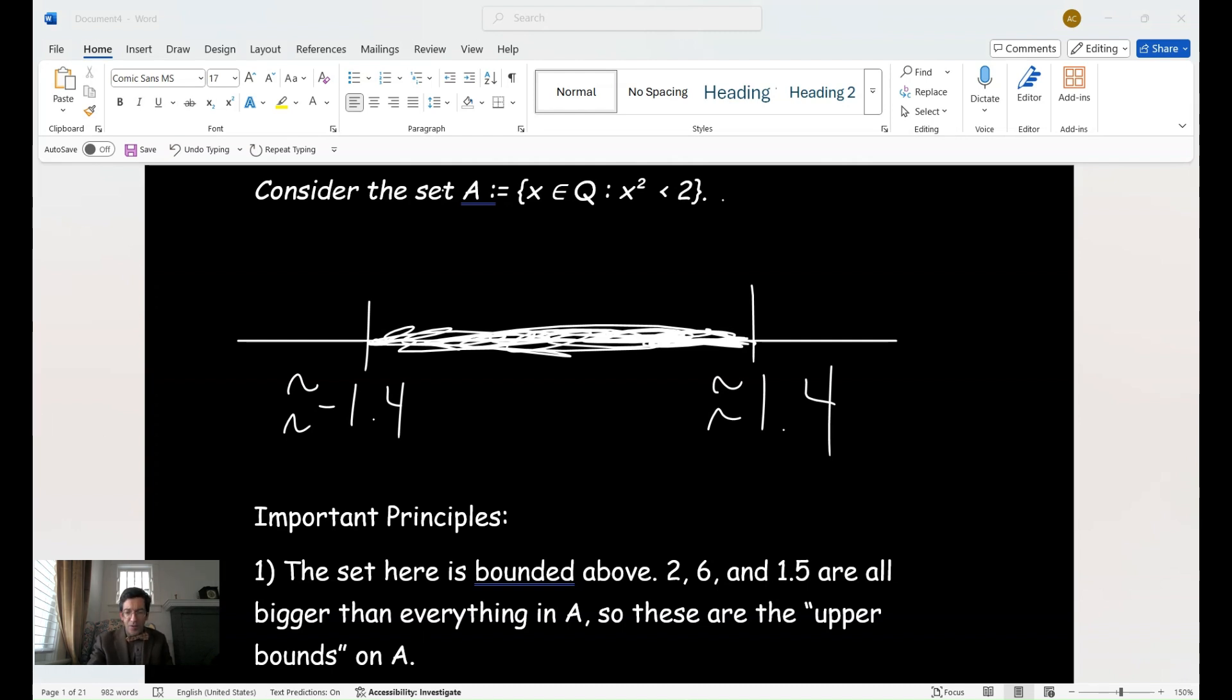The first principle, of course, is that the set is bounded above, we say. So in other words, two, six, and even 1.5 are all bigger than everything in set A. So these are what we call the upper bounds on A.